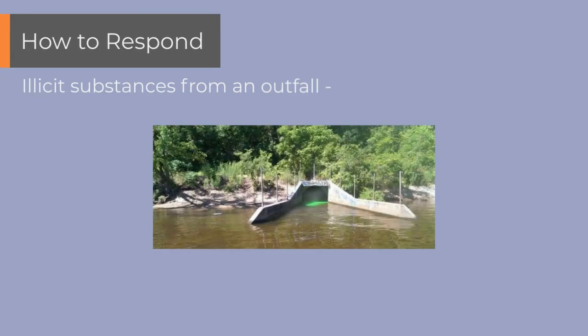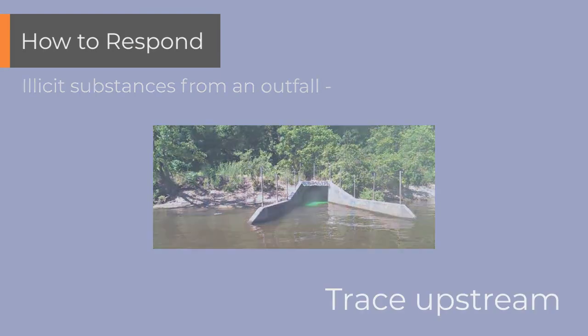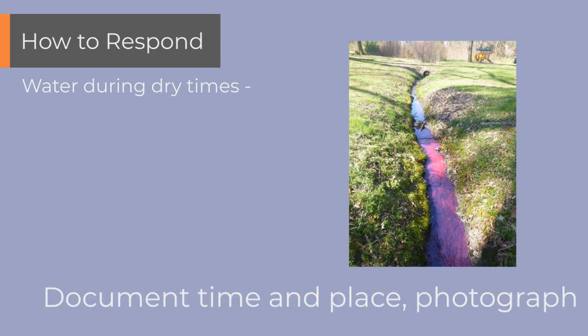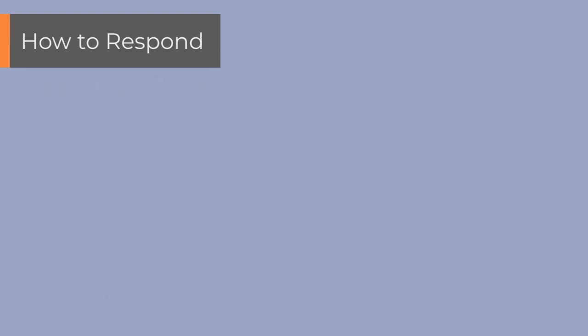If you see potentially illicit substances coming from an outfall, trace it upstream to determine a source if possible. For water during dry times, document the time and place of discovery and take a picture. It will probably require further research to identify a source.